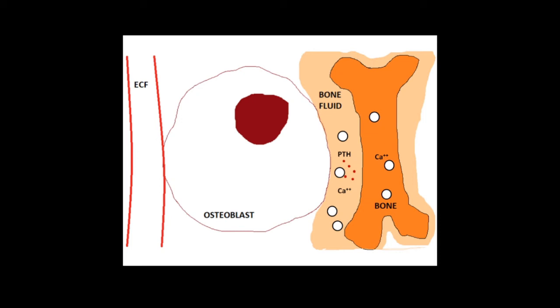On osteoblasts, it causes activation of G protein coupled receptors which cause formation of cyclic AMP. Cyclic AMP in turn causes movement of calcium from bone fluid into the osteoblast cell cytoplasm.